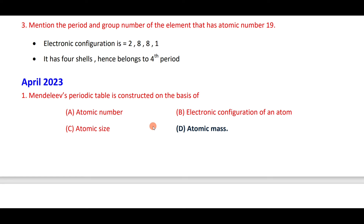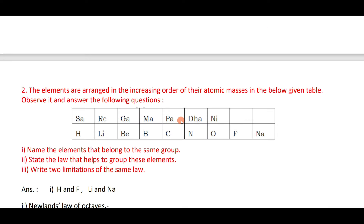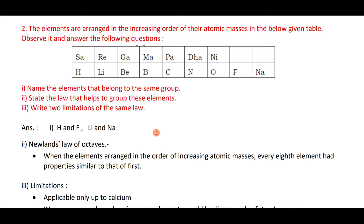Mendeleev's periodic table is constructed on the basis of atomic mass — elements are arranged in increasing order of atomic mass. From Newlands' table, elements in the same group include F and Cl (similar properties) and Li and Na — the first element is similar to the eighth element, following Newlands' law of octaves: when elements are arranged in increasing order of atomic mass, every eighth element has properties similar to the first.